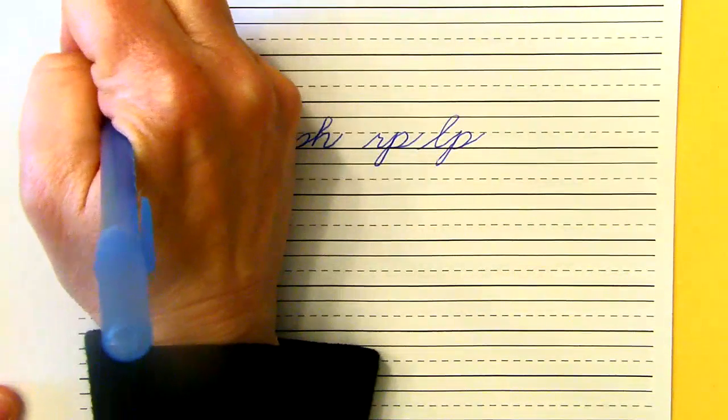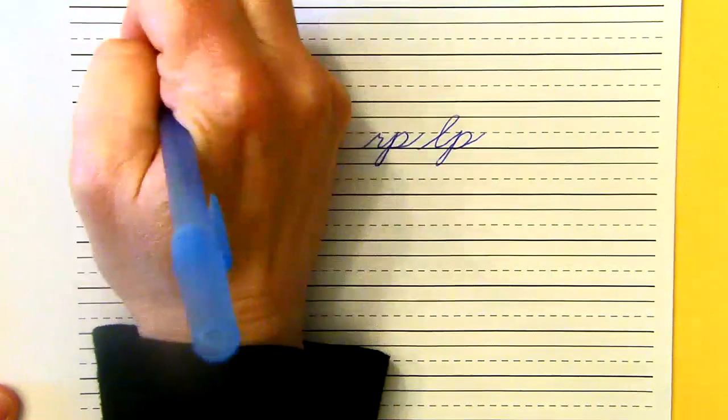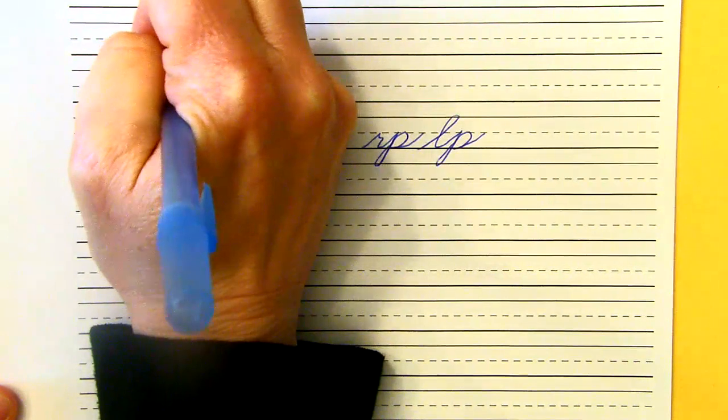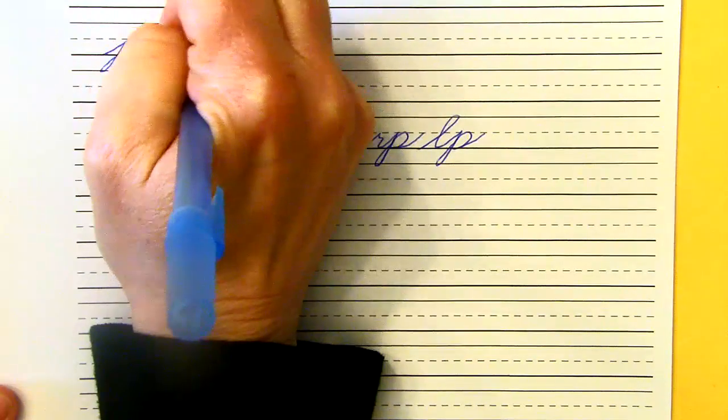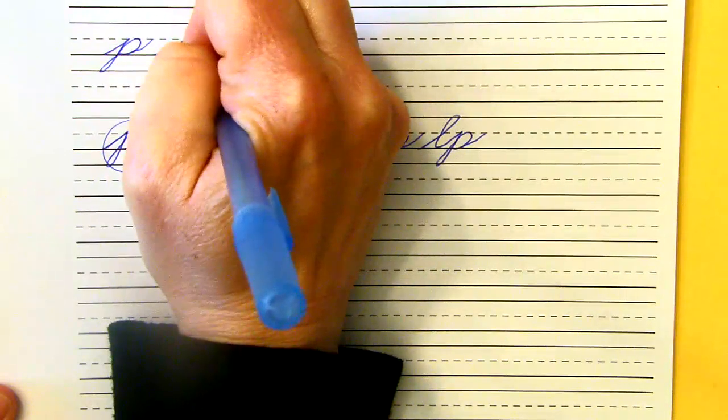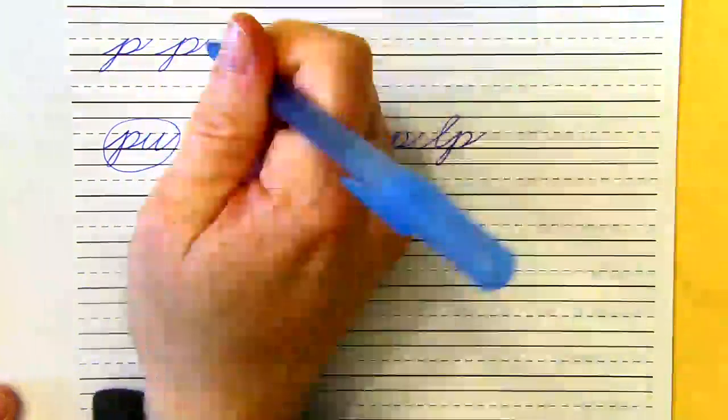Undercurve, pull to the basement, loop back, up and over curve, undercurve. Undercurve, pull to the basement, loop back, up and over curve, undercurve. Undercurve, slant to the basement by pulling it back, loop back, up and over curve, undercurve. There are three P's. I think this one is my best.